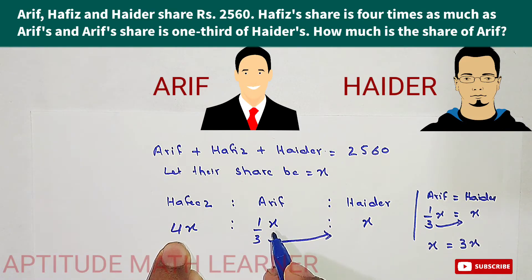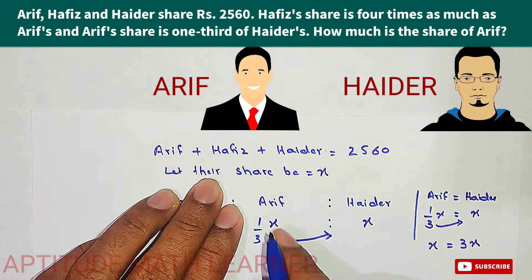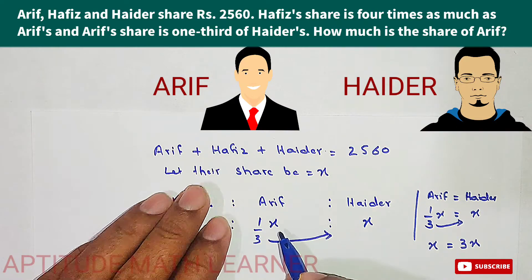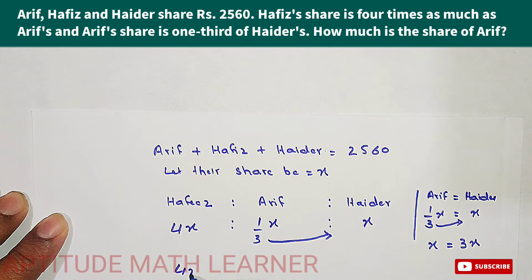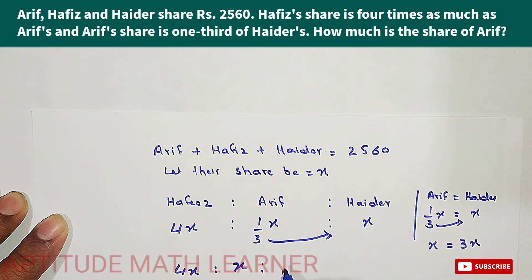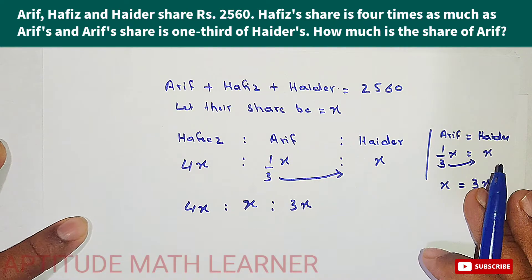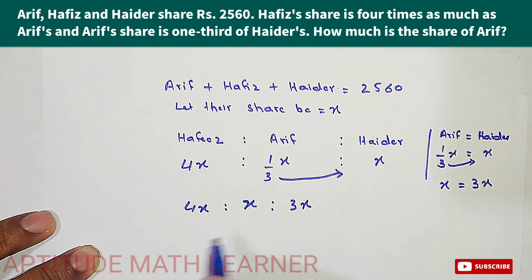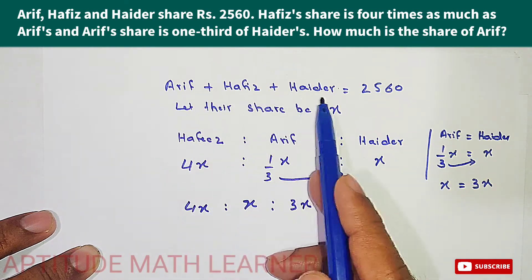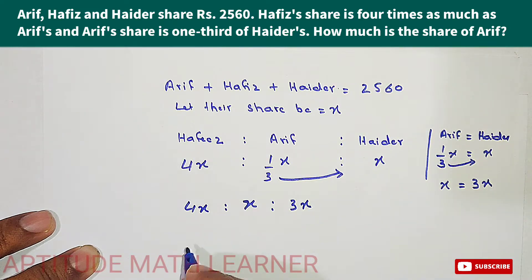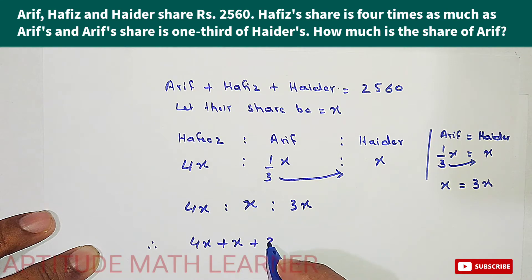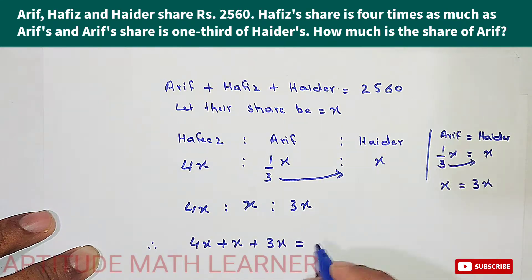Arif was having only x from the beginning. In the form of Arif and Hader, Arif still gets only the share equal to x. So the shares become: Hafiz is 4x, Arif is x, and Hader is 3x. These are the shares for Hafiz, Arif, and Hader. The total share of all three equals two thousand five hundred and sixty.